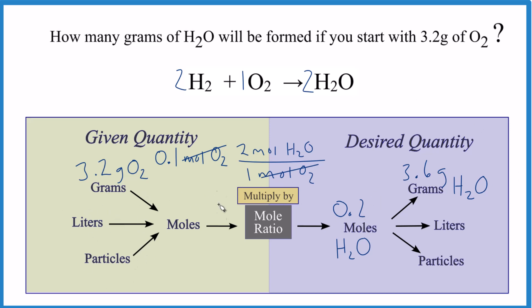It's always going to be the same thing. You'll be given something, convert to moles, use the ratio to get moles of the desired quantity, and then change it back to whatever you need. That's it.